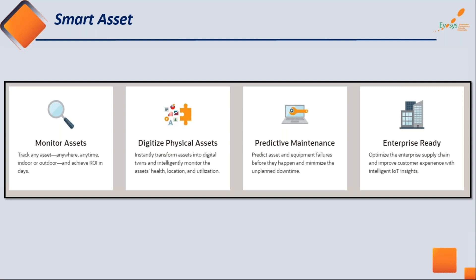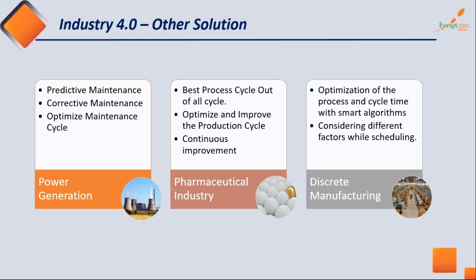Based on these parameters, you can predict when maintenance is needed. Enterprise integration means optimizing the supply chain — smart assets can be closely integrated with supply chain modules. In a nutshell, for the power generation industry, we can do predictive maintenance, corrective maintenance, and optimize maintenance cycles.